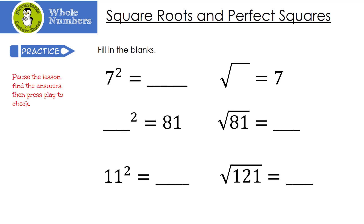Here are a couple for you to try. Pause the lesson, find the answers, then press play to check. Let's see how you did. 7 squared, or 7 to the second power, is 49, and the square root of 49 is 7. What squared gives me 81? That would be 9 — 9 squared is 81, so the square root of 81 is 9. What's 11 squared? That turns out to be 121, and the square root of 121 is 11.